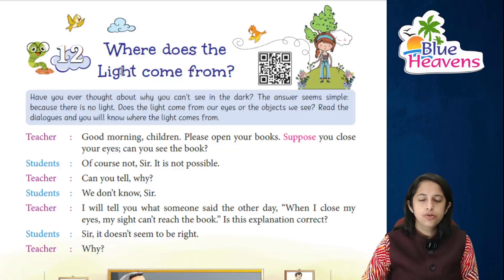Good morning students, I hope you all are studying well and are in good health. We'll be studying a very scientific chapter — where does the light come from? As we all know, the speed of light is 3 × 10⁸ meters per second. It's a very interesting and factual chapter. Let's just begin. The title of our chapter is: Where does the light come from?